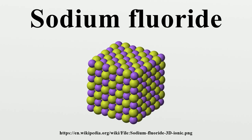Production: NaF is prepared by neutralizing hydrofluoric acid or hexafluorosilicic acid, byproducts of the reaction of fluorapatite from the production of superphosphate fertilizer. Neutralizing agents include sodium hydroxide and sodium carbonate. Alcohols are sometimes used to precipitate the NaF from solutions containing HF. Sodium fluoride also precipitates as the bifluoride salt NaHF2; heating the latter releases HF and gives NaF.